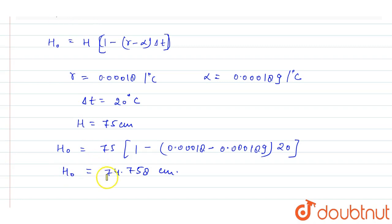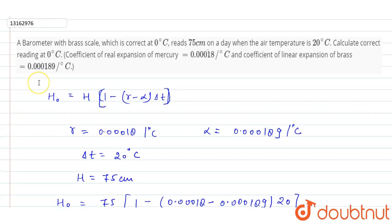Now, here we can see when we have to find our correct reading from 75 cm. Why is this? Because the temperature has reduced, so the final reading will be less than 75 cm.